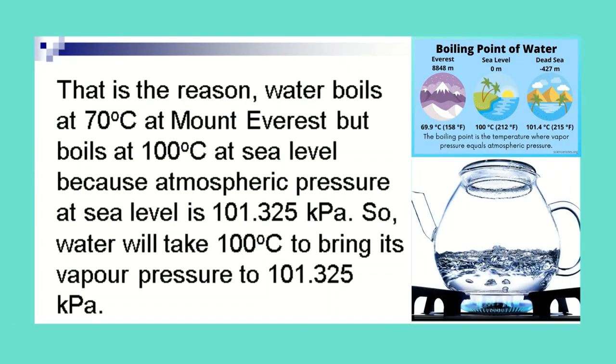That is the reason, water boils at 70°C at Mount Everest but boils at 100°C at sea level because atmospheric pressure at sea level is 101.325 kilopascals. So, water will take 100°C to bring its vapor pressure to 101.325 kilopascals.